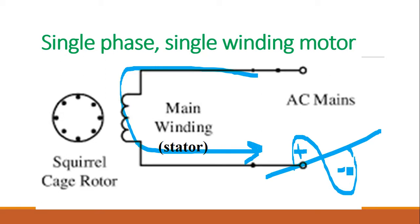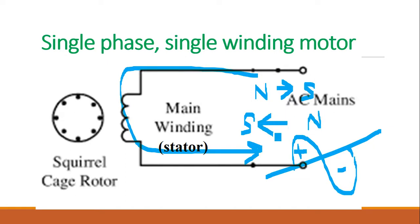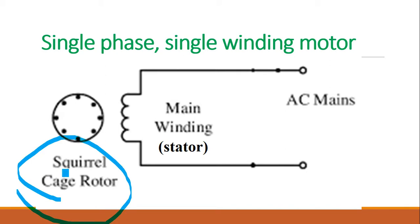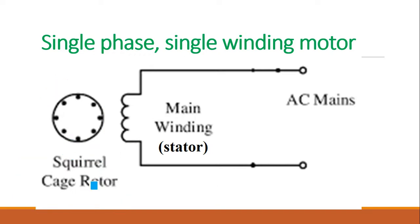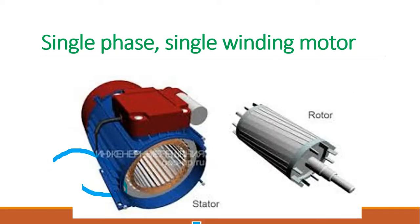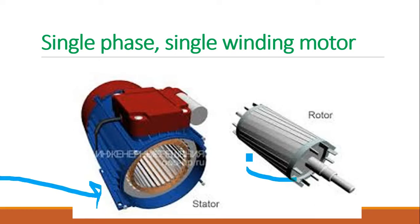What is positive flux and negative flux? If we consider north and south poles, the winding polarity continuously changes — this is known as alternating flux. There is also a rotor part, which is the rotating part made as a squirrel cage rotor. In the squirrel cage rotor, there is no electrical connection with the main winding — the rotor circuit is totally closed. The main winding is provided on the stator.